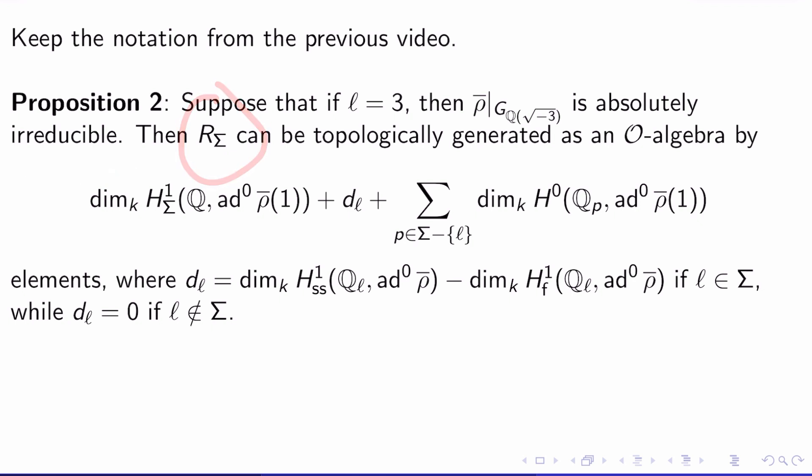Then R_Σ, the type sigma universal deformation ring, can be topologically generated as an O-algebra by dim_k H^1_Σ(Q, ad^0 ρ̄(1)) plus what we'll call d_l plus the sum over all primes p in Σ minus {l} of dim_k H^0(Q_p, ad^0 ρ̄(1)) elements.